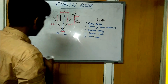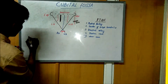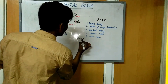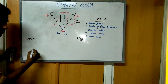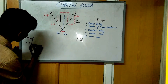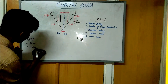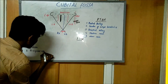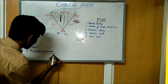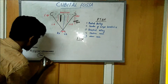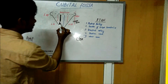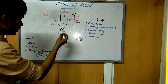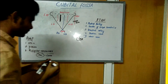Now we'll see the roof and the floor. The roof is first the skin, then the fascia, and third the bicipital aponeurosis, which covers and protects the three structures: the tendon, the artery, and the nerve.